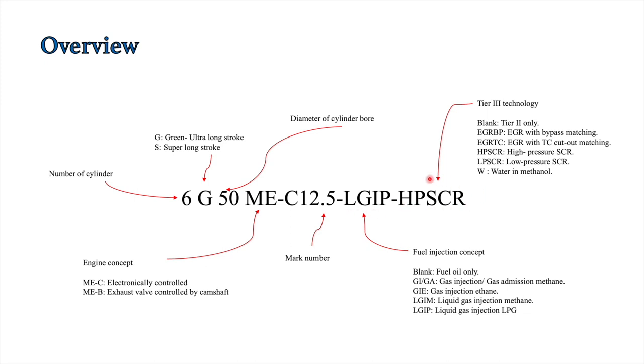This over here, HPSCR, is basically the tier 3 technology. If nothing is there, previously it was blank for tier 2, but for tier 3 to meet the requirements, it is EGRBP—that is exhaust gas recirculation with bypass matching, or exhaust gas recirculation with cutout matching—then HPSCR is high pressure SCR, or LPSCR is low pressure SCR.